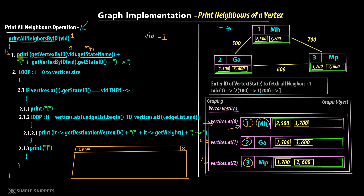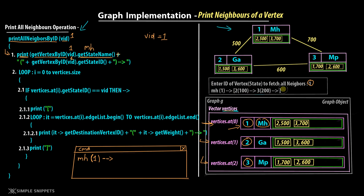Then we concatenate an opening bracket onto the command prompt. We again call getVertexByID and then dot getStateID — passing 1, the state ID of MH is 1 — so 1 is retrieved, then we add a closing bracket, then the arrow. This completes step 1: we've printed the first part of our output — 'MH(1) ->' — which is half of the desired output. The second part will be all the neighbors of that vertex.